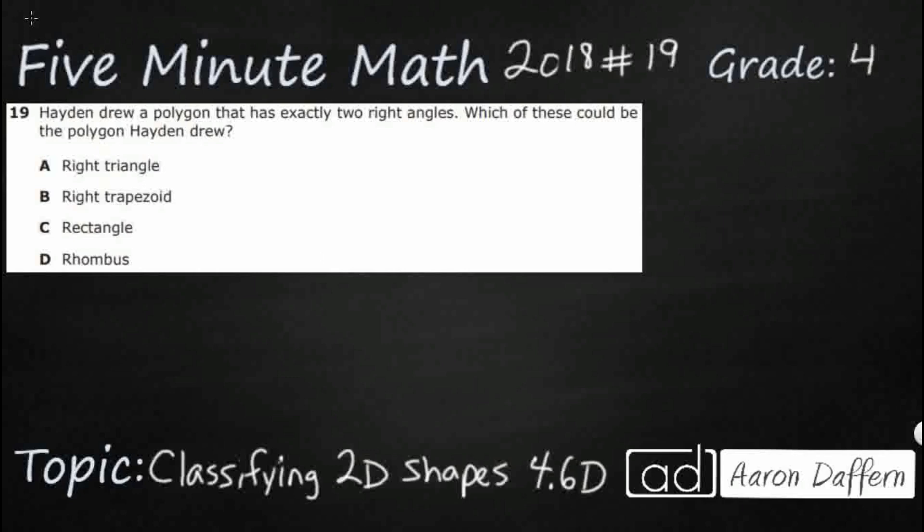If you have not done so already, please go ahead and take a moment to pause the video, work this problem out on your own, unpause it, and then we will look at our answers together. So Hayden is drawing a polygon that has exactly two right angles — which of these could it be?